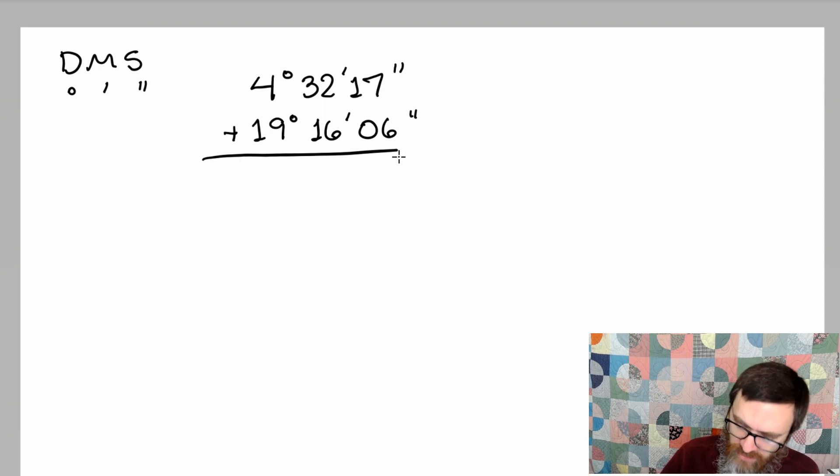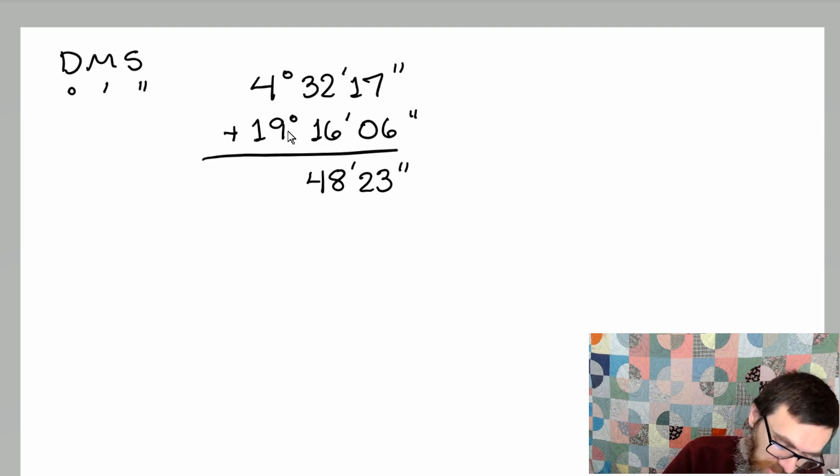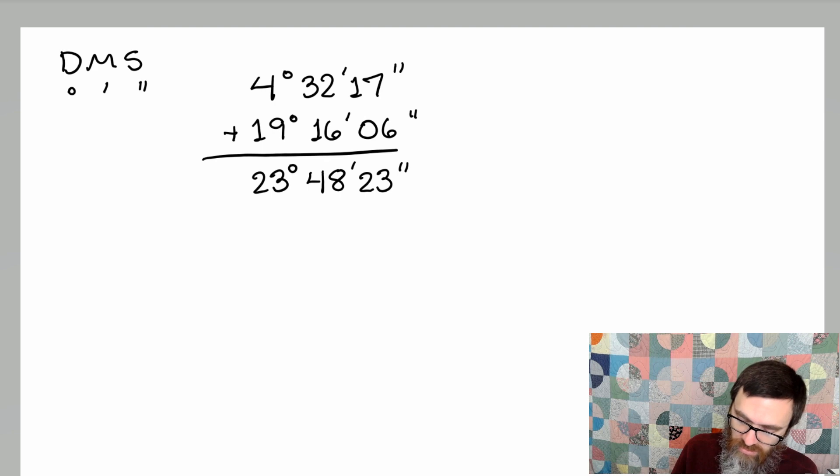In this first column, we've got 17 seconds and 6 seconds, so that combines to give me 23 seconds. 32 minutes, 16 minutes gives me 48 minutes. And 4 degrees and 19 degrees is a grand total of 23 degrees. So there's our answer. Just add those guys, and we are right as rain.